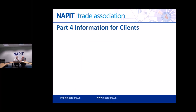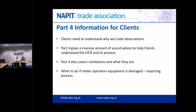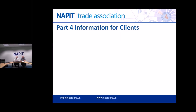Moving on, Part 4 covers information for clients. When clients look at EICRs they may be experienced and able to understand the codes, but not always - sometimes they may be feeling a little lost. The Code Breaker gives a massive amount of sound advice to help clients understand the EICR process. For example, a landlord with a number of properties getting EICRs can use Part 4 to understand limitations, what to do if there's damage to the supplier's or meter operator's equipment, and whether there's a reporting process for that.